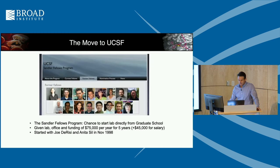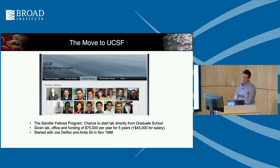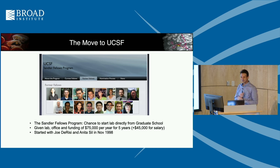I finished up in Hidde's lab and moved to UCSF as a fellow. I was there at a really fun time — started at the same time as Joe DeRisi, who is now head of the Chan Zuckerberg Institute in San Francisco. He was making his spot arrays at the time. They gave me $75,000 a year to run my lab and a salary of $45,000, which seemed amazing coming from graduate school, though living in San Francisco was not easy on that.